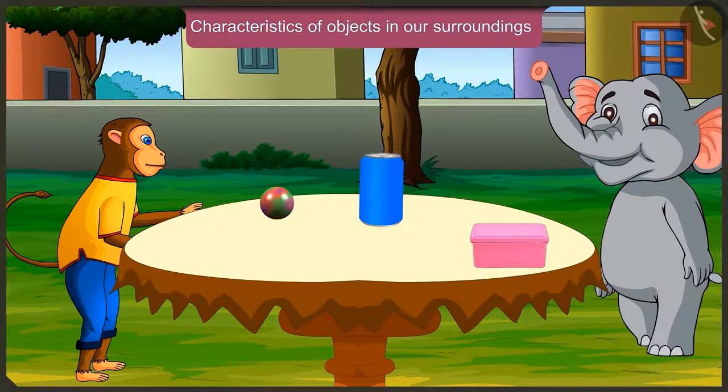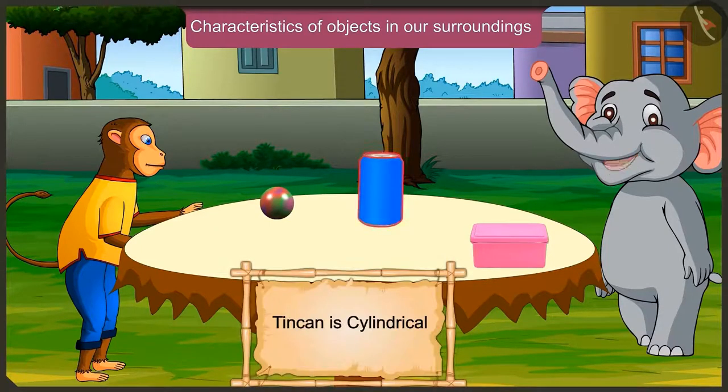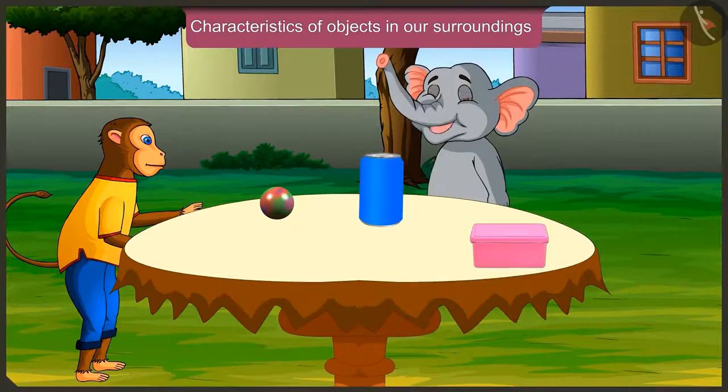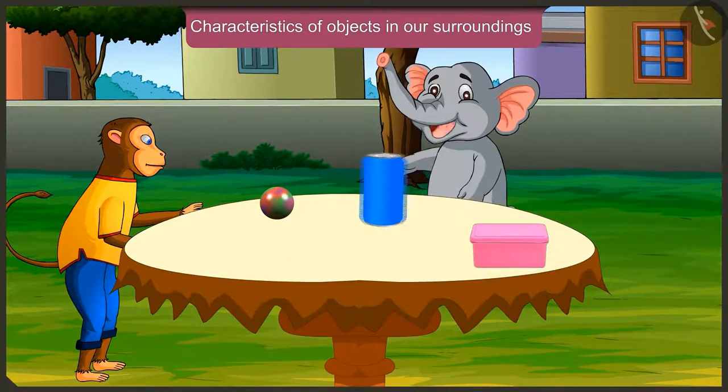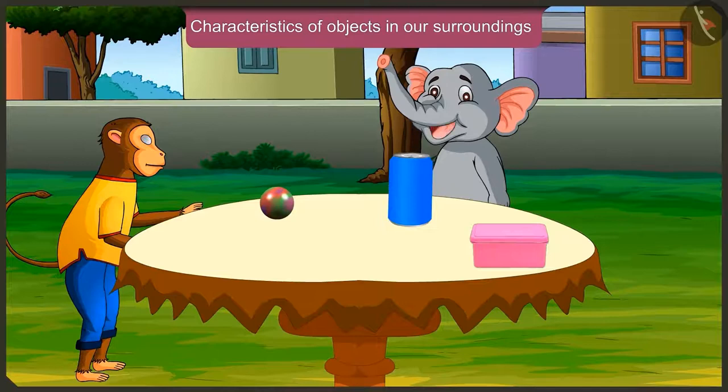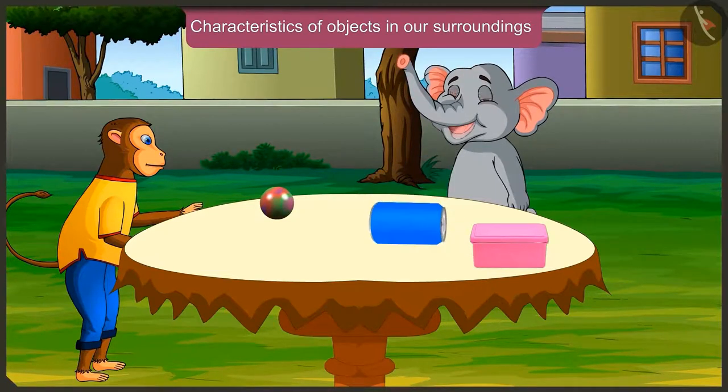And the tin box? Oh yes, this tin can has a cylindrical shape. That means it's a cylinder. So we can put it upright and slide it, and also roll it like this.